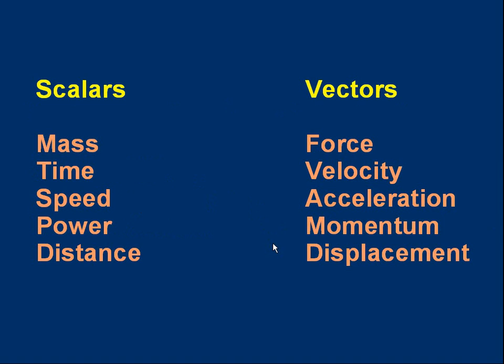Here we've got a list of scalars on the left and a list of vectors on the right. Take a look at them. Can you spot what the difference is? What makes some things a scalar and other things vectors?